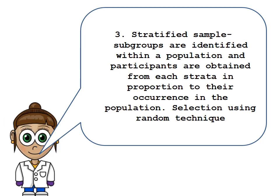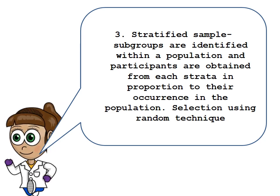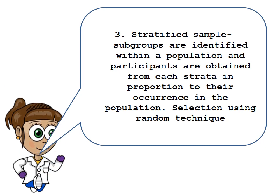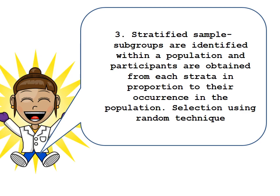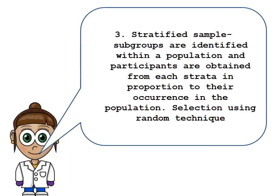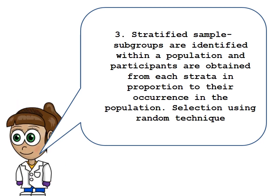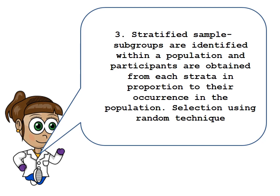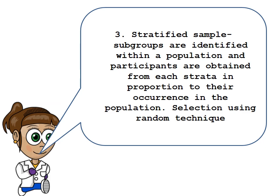The next one is stratified sampling, which is a little bit tricky but you will get the hang of it. Stratified sampling is when subgroups are identified within a population and participants are obtained from each strata in proportion to their occurrence in the population. For example, if our target population is 60% males and 40% females, our sample needs to be 60% male and 40% female.